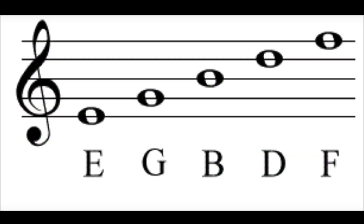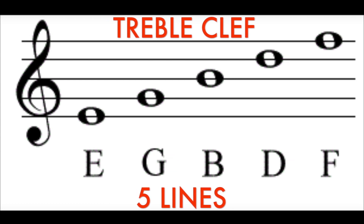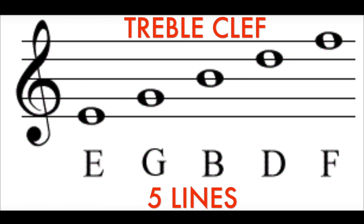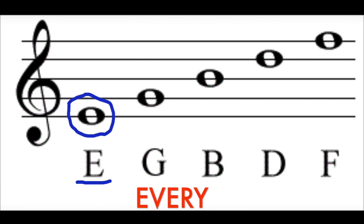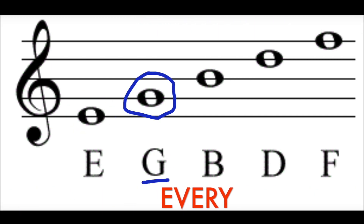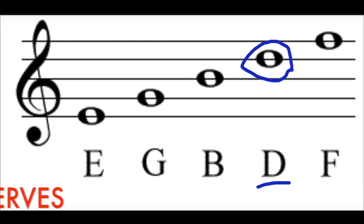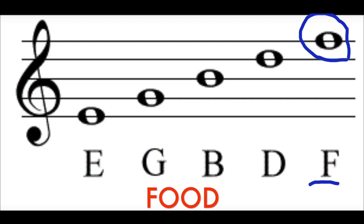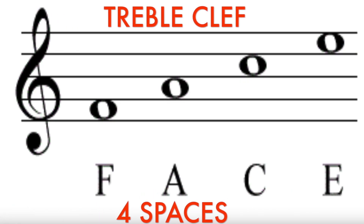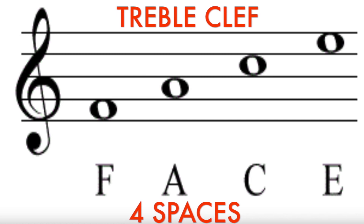We have five lines in the treble clef: E, G, B, D, and F from bottom to top. So we have E on the first line, G on the second line, B on the third line, D on the fourth line, and F on the fifth line.